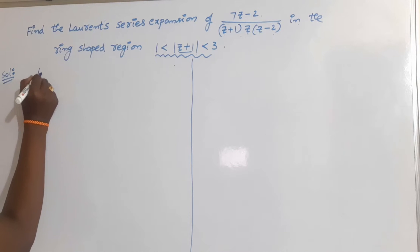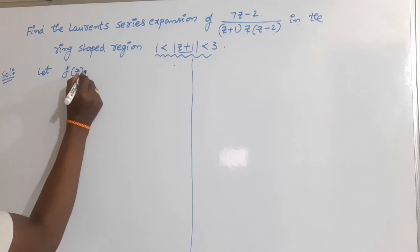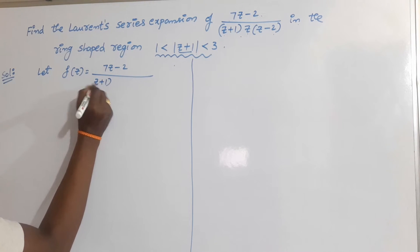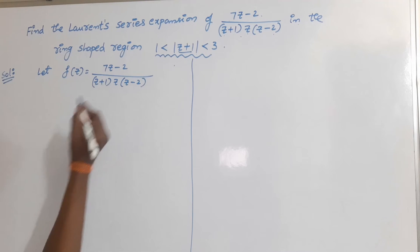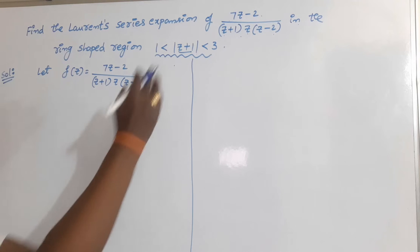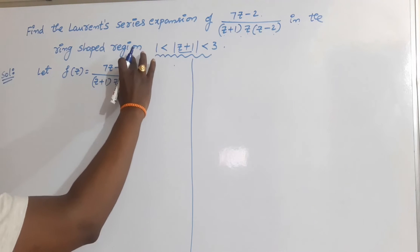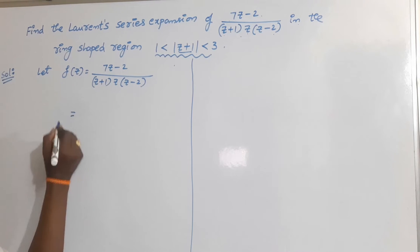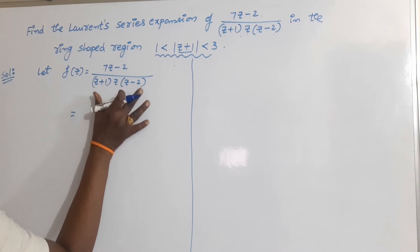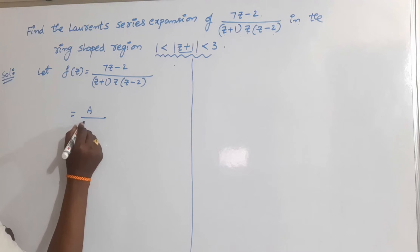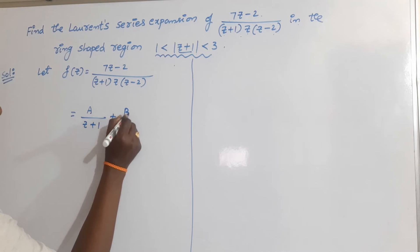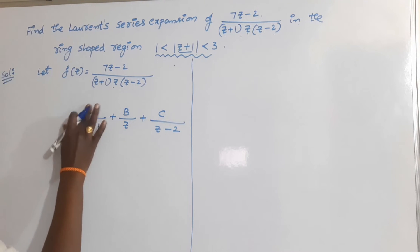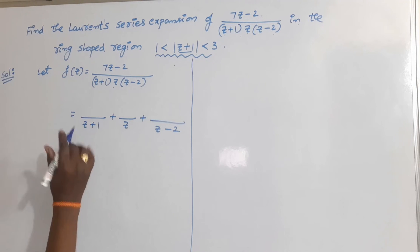Let f(z) = (7z - 2) / [(z + 1)(z)(z - 2)]. Before finding the expansion of this type of function, we should resolve this fraction into partial fractions first. So for partial fractions we express it as A/(z + 1) + B/z + C/(z - 2), and we find the constants A, B, C.